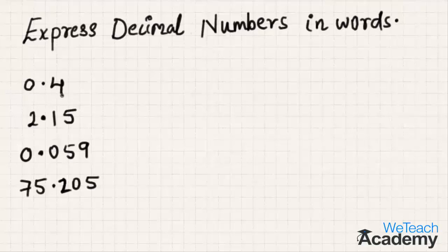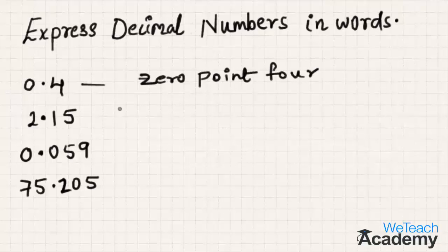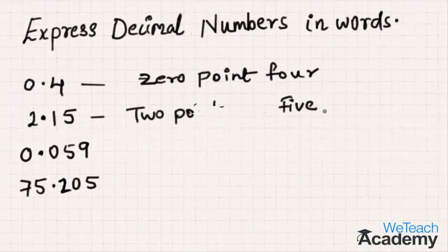Coming to the first example, this can be expressed as 0.4. Coming to the second example, this can be expressed as 2.15 — the decimal part must always be expressed separately.